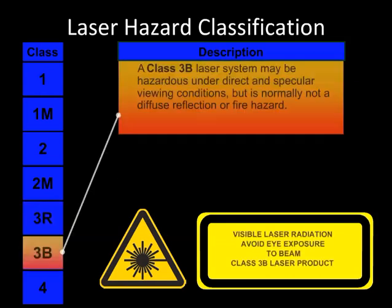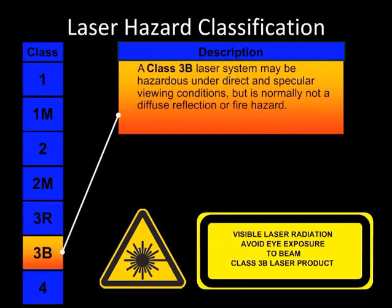Class 3B: Eye damage is likely to occur if the beam is viewed directly or reflected from a shiny, mirror-like surface. This includes an accidental or momentary exposure. If the laser emissions are near the upper limits for a Class 3B, the laser light might be capable of producing minor skin injuries or even pose a risk of igniting flammable materials.